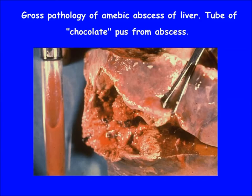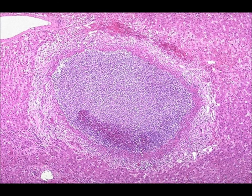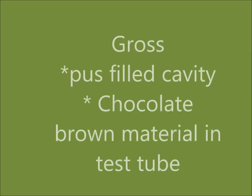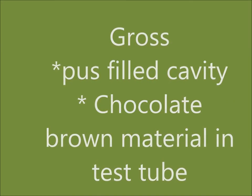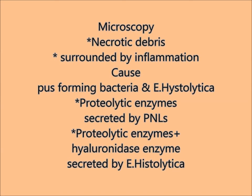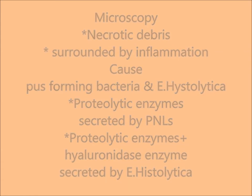Liquefactive necrosis can also occur due to bacterial infection and Entamoeba histolytica infection. A pus-filled cavity is seen in the liver, with chocolate-brown fluid obtained on drainage. Microscopically, there is central pus surrounded by inflammation. Points to remember: grossly there is a pus-filled cavity; microscopically there is necrotic debris surrounded by inflammation. Causes include pus-forming bacteria and Entamoeba histolytica, as proteolytic enzymes are secreted by leukocytes and from damaged cells.